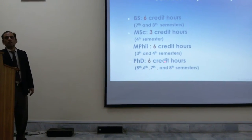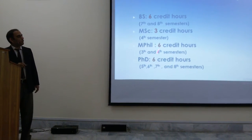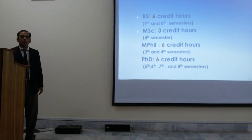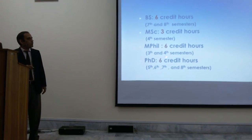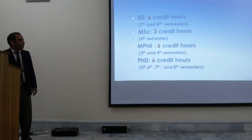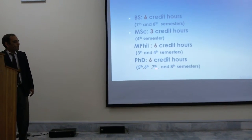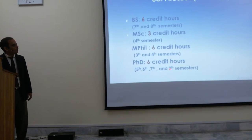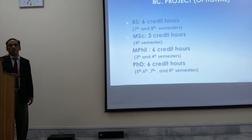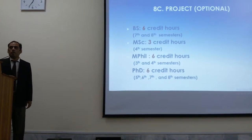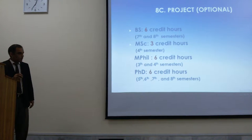For PhD, the thesis credit hours are also 6 — equal to MSc. But MSc has a bigger project with 4 semesters reserved for it, whereas in the PhD program there are only 2 semesters for the thesis.